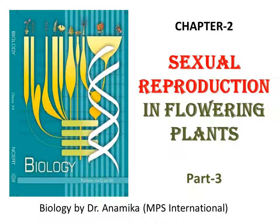Good morning dear students. Here we are with the concluding part of Chapter 2, Sexual Reproduction in Flowering Plants. Before starting this video, I want to recall all the important terms discussed in our last videos. The most important term was microsporogenesis — the formation of microspore tetrads, which later developed into pollen grains. Pollen grains contain two unequal cells: the vegetative cell and the generative cell. The generative cell nucleus is protruded through the pollen tube, which divides into two male gametes when adhered on the stigma, and through pollen-pistil interaction, the male gametes are transferred to the embryo sac.